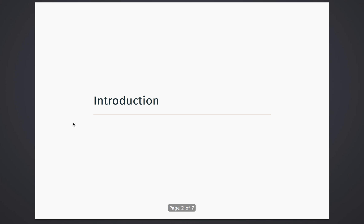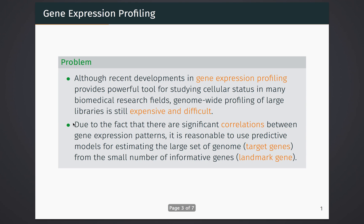Let's start with some background information. In the human genome, there are around 20,000 protein-coding genes and the profiling of the whole human genome for large-scale samples is expensive and difficult. According to previous biological analysis, the expression of human genes are highly correlated.